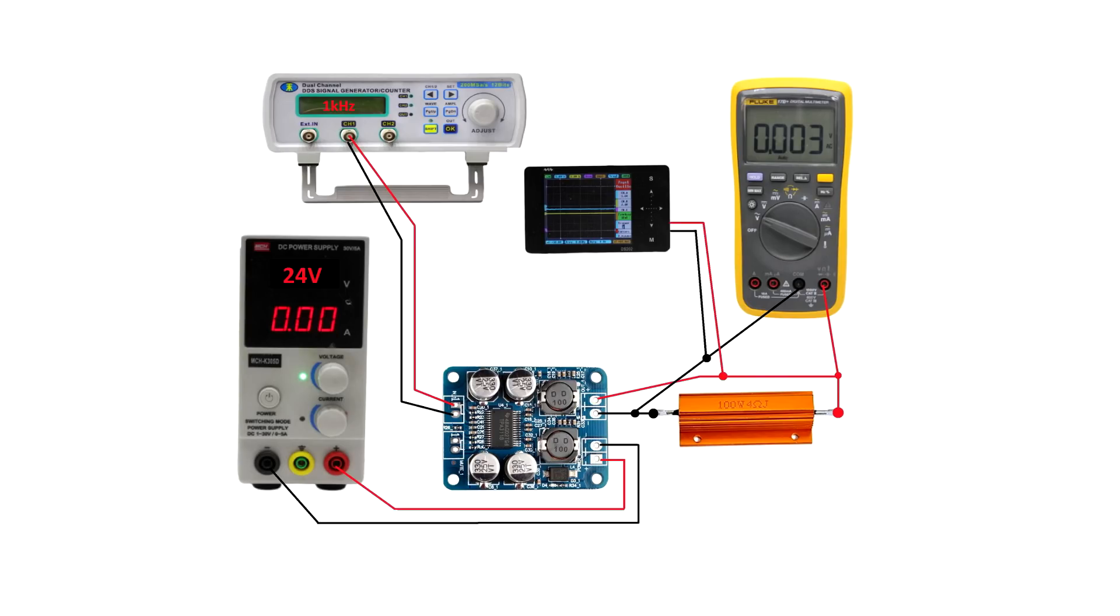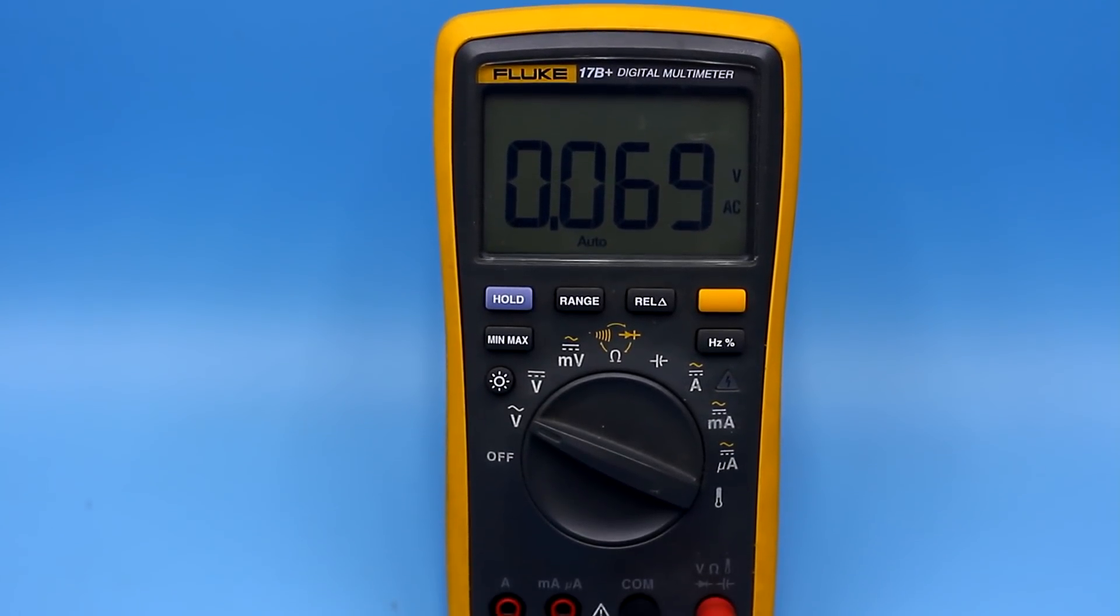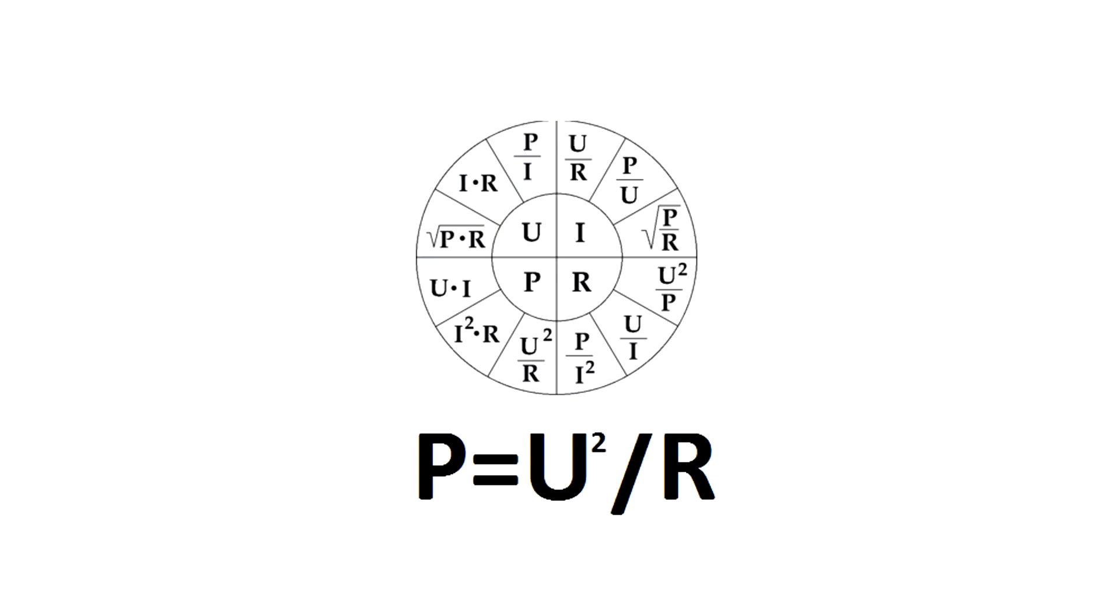Then we fix the maximum value of the alternating voltage on the load that the multimeter will show. And we will calculate the output power by the following formula, where U is the effective value of the alternating voltage on the load, and R is the resistance of this load.